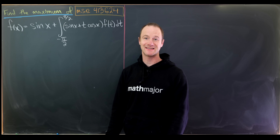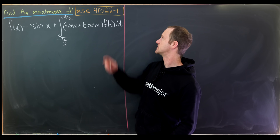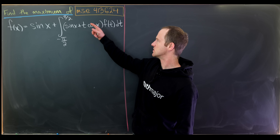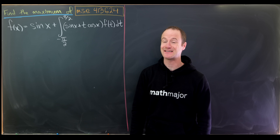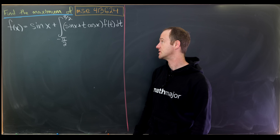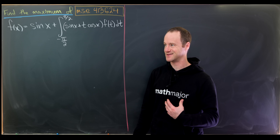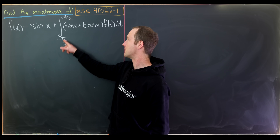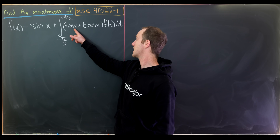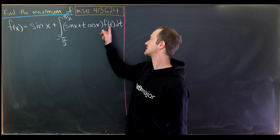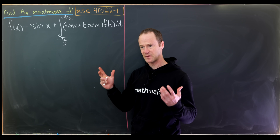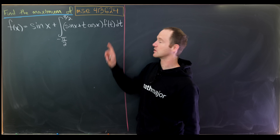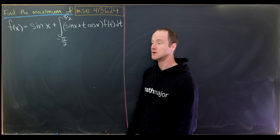Today I've got a really nice problem that I found on the math stack exchange — it's number 413624 if you want to look it up. What I like about this is it looks not very difficult just by the statement: find the maximum of a certain function. But when you notice how this function is defined, you'll see it's a bit tricky. We have f of x equals sine of x plus the integral from minus pi over 2 to pi over 2 of sine of x plus t cosine of x times f of t dt. So there's a recursive type definition of this function in that it's defined in terms of its own integral.